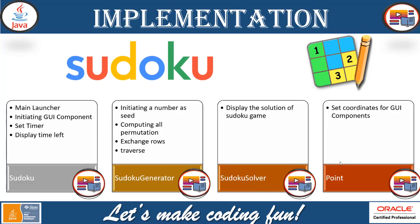Now let's take a look at the design and implementation. The Sudoku game is basically implemented using the logic of permutation and combination. When we have a square organized with numbers, we need to make sure we have different types of permutations available for all the missing numbers. This particular logic is implemented.